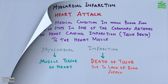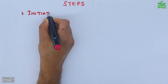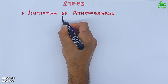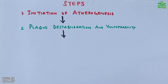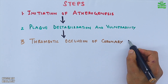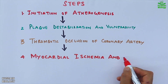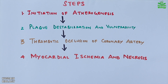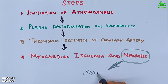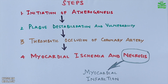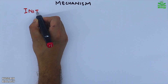There are four major steps in myocardial infarction. First is initiation of atherogenesis. Second is plaque formation and destabilization. Third is thrombotic occlusion of the coronary artery. And fourth is myocardial ischemia and necrosis. This entire sequence leads to what we call a myocardial infarction. Now let's see the whole mechanism of this process in detail.